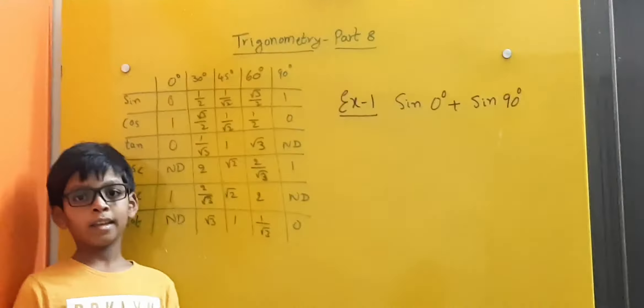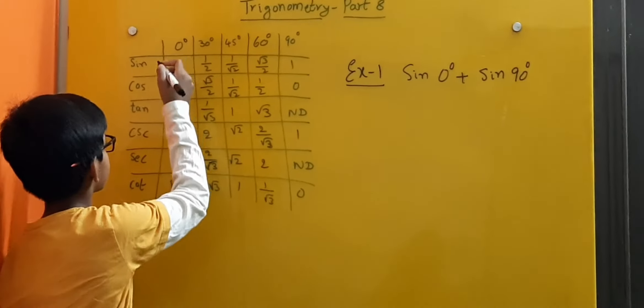Here is an example problem: sin 0 degrees plus sin 90 degrees. Here, sin 0 degrees is equal to 0.